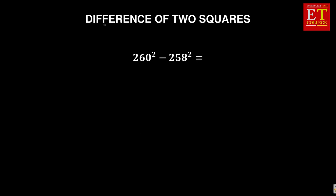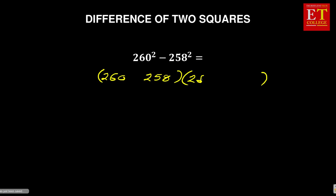Now we are going to use the concept of the difference of two squares to check if we also get 1036. When using the difference of two squares concept, given 260 squared minus 258 squared, you open two brackets. In the first bracket you have 260 and 258, and in the second bracket you again have 260 and 258. In the first bracket you put a negative sign, and in the second bracket you put a positive sign.